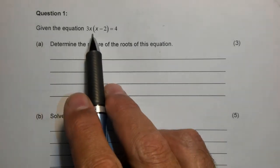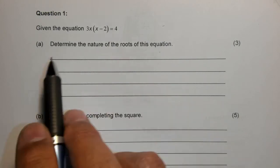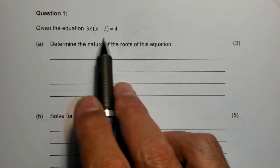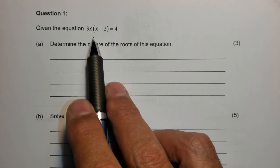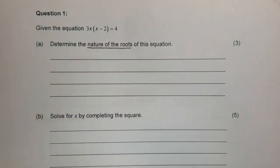Given that the equation 3x times x minus 2 equals 4, the first question they ask is determine the nature of the roots of this equation. Now we all know that to find the nature of the roots, we need to investigate the value of the discriminant delta.